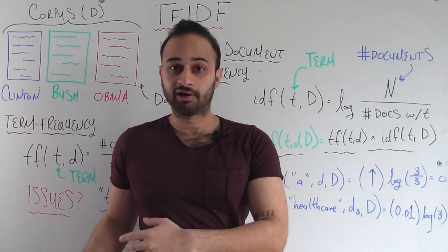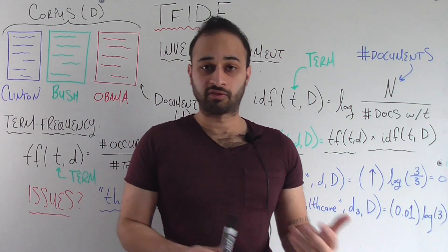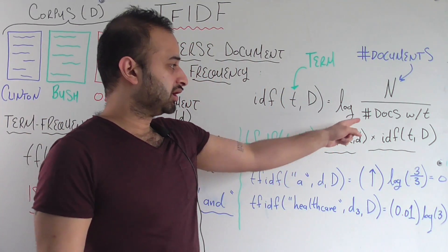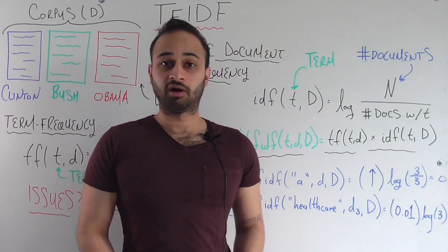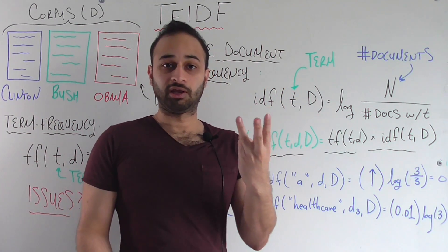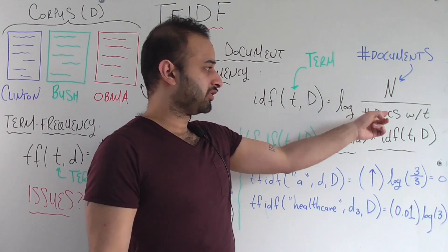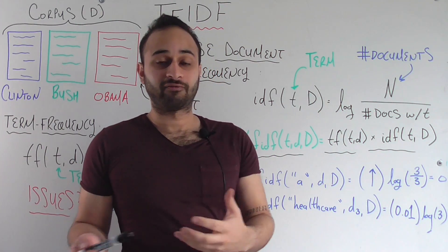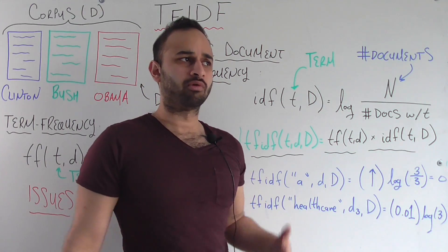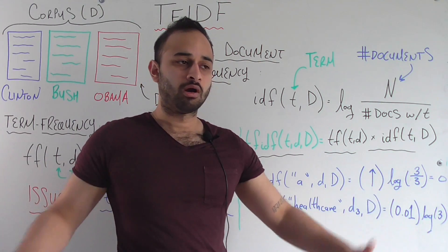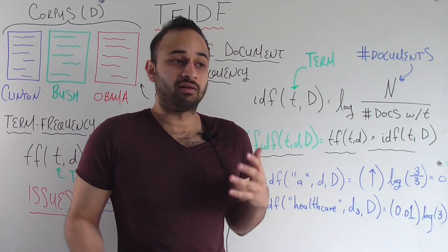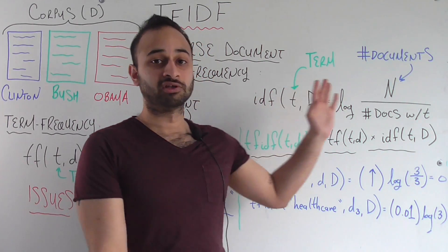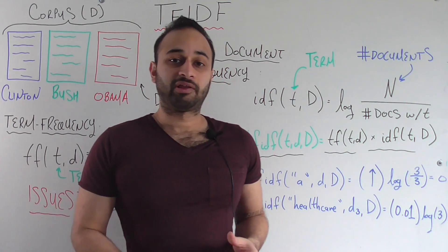Let's look at the word 'the' again. It's pretty obvious that 'the' is going to appear in all of these documents. So our denominator — the number of documents with the word 'the' — would be three. If we have three divided by three, that's log of one, which is going to be zero. That's how IDF helps: it basically says that words that are really common to all documents are not helpful for telling these documents apart. Therefore, we give them an IDF of zero.